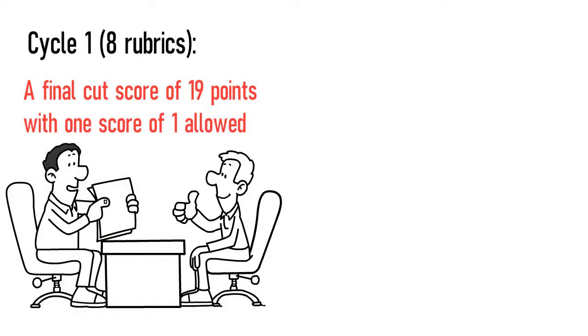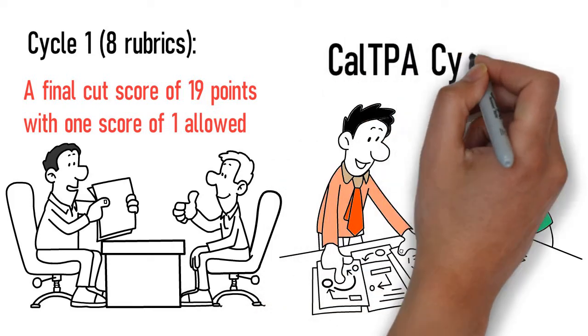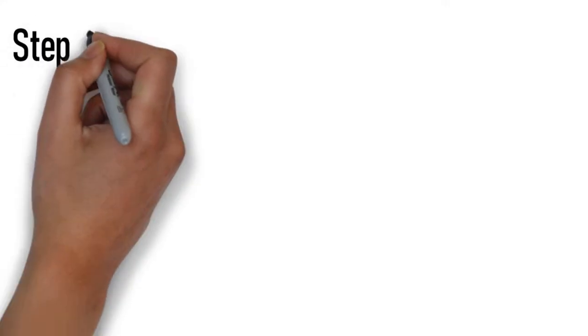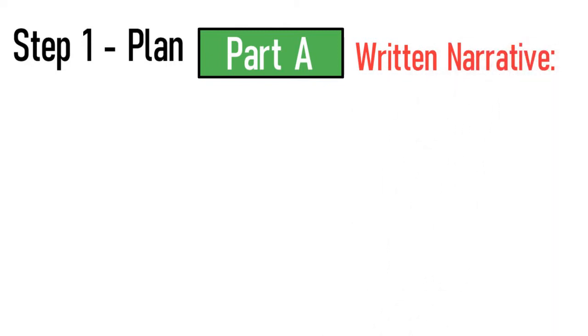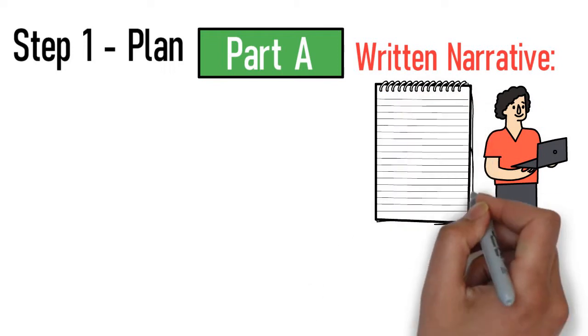The following are evidence that is required to be submitted for grading for the CalTPA Cycle 1. Step 1, Plan. Part A, Written Narrative: Getting to know your students, no more than nine pages. The template is provided in the handbook.